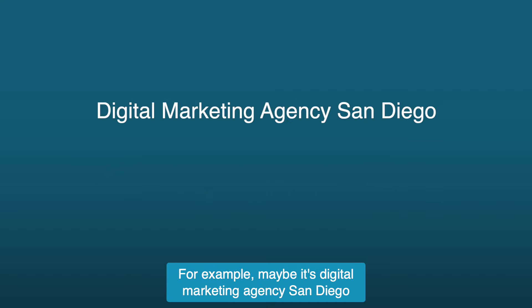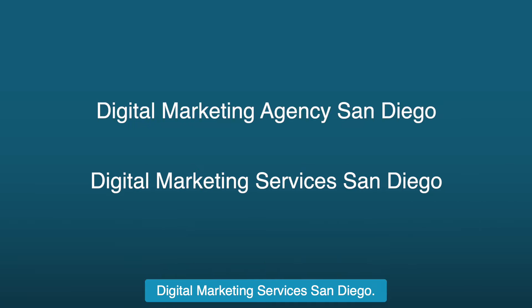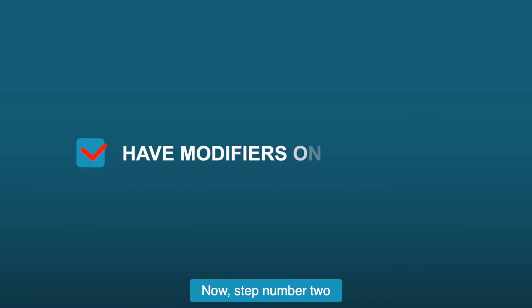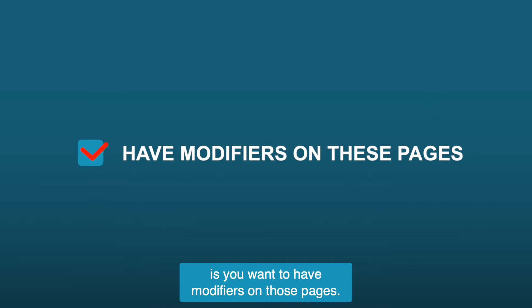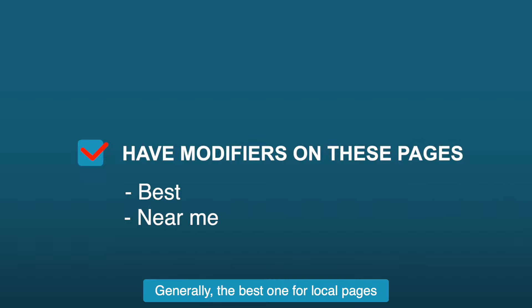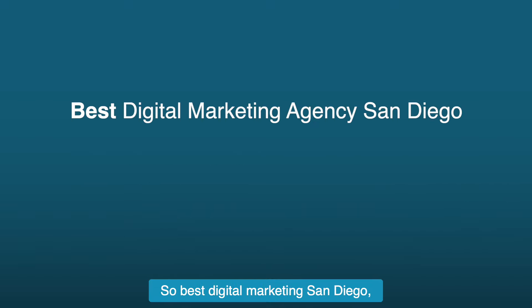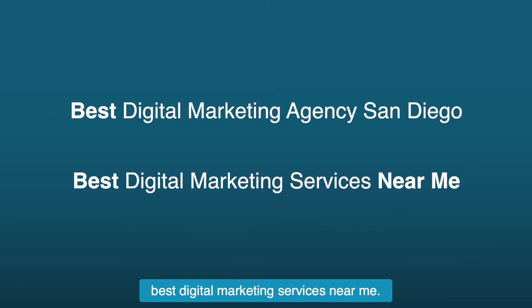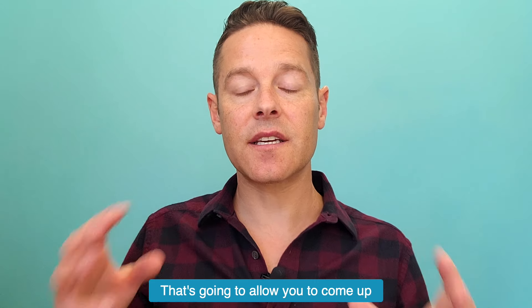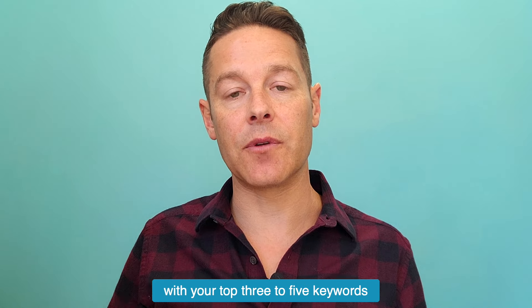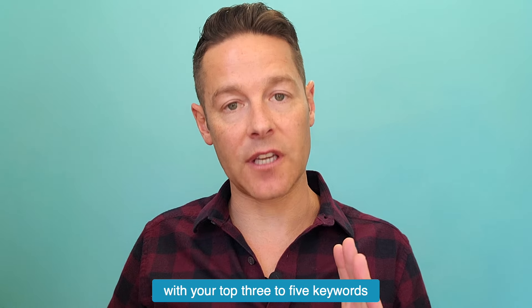For example, maybe it's Digital Marketing Agency San Diego or Digital Marketing Services San Diego — just using an example from us. Step number two is you want to have modifiers on those pages. Generally, the best ones for local pages are 'best' and 'near me.' So best digital marketing San Diego, best digital marketing services near me. That's going to allow you to come up with your top three to five keywords.